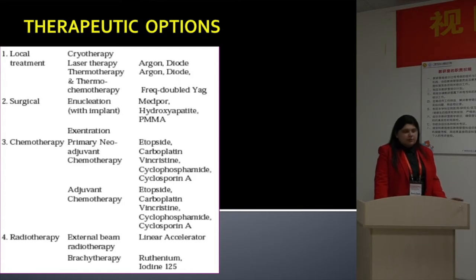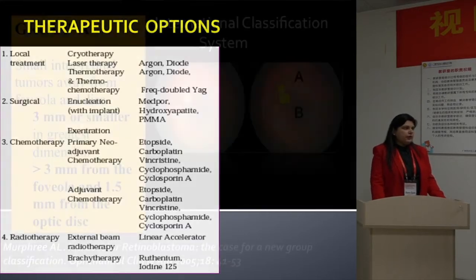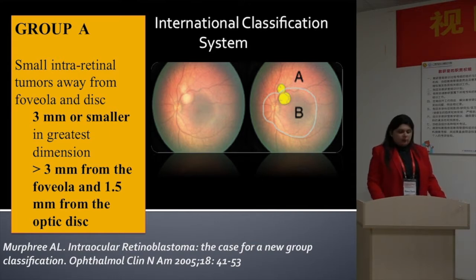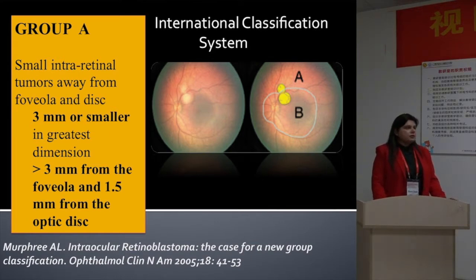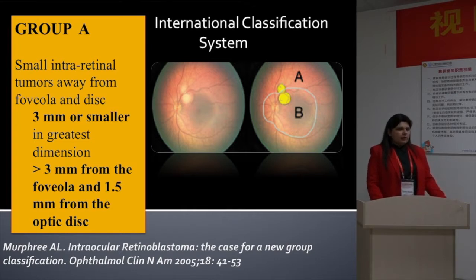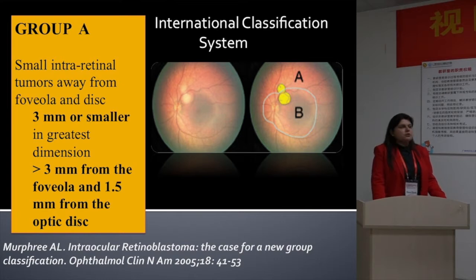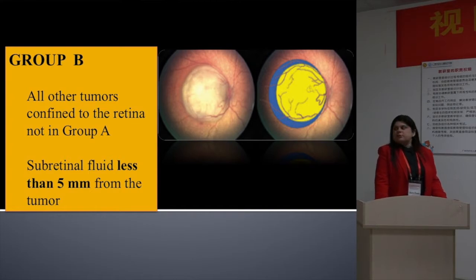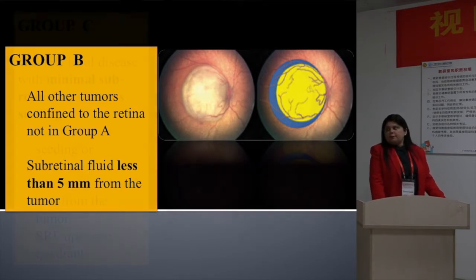I will confine my talk to the systemic chemotherapy we use for intraocular tumors. We use the international classification system proposed by Munfiq et al. Before knowing which cases are candidates for systemic chemotherapy, we should have a thorough understanding of this classification. Group A cases are the smallest tumors that don't require systemic chemotherapy.